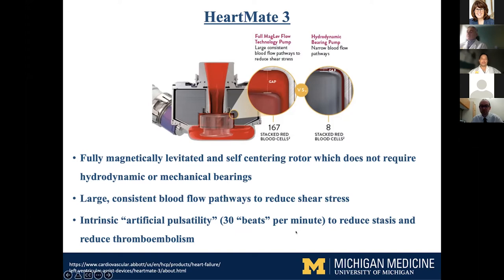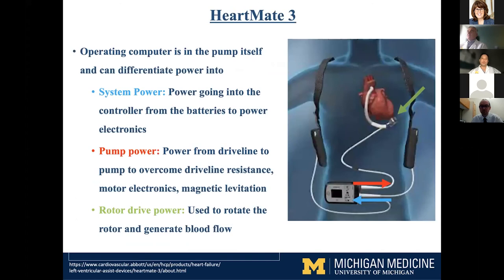The HeartMate 3 has very large, consistent blood flow pathways to reduce shear stress. It also has what we call artificial pulsatility — a vary cycle where the pump alternates speeds, giving a slight pulsatility at about 30 beats per minute. It's really not designed to mimic physiological pulsatility; it's to wash the pump, reduce stasis, and reduce the chance of thromboembolism.